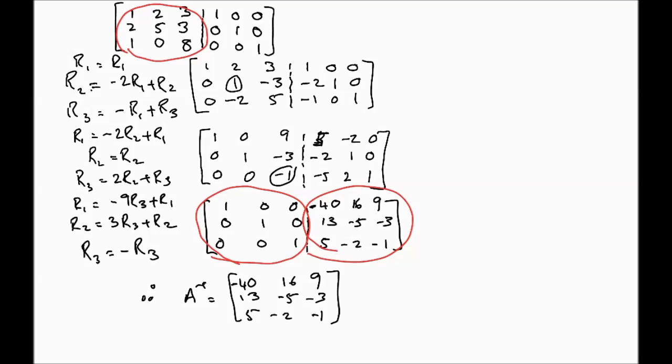You can verify this yourself: multiplying A-inverse by the original matrix A should give you the identity matrix. This is how we calculate the inverse of a matrix — we perform row operations on A, and if we attain the identity matrix, those same row operations performed on the identity give us the inverse.